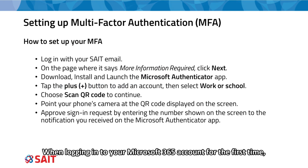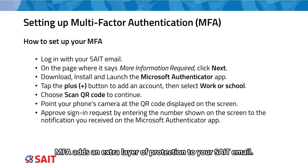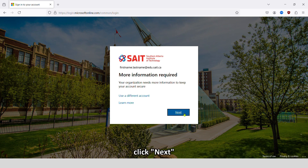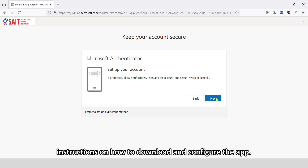When logging into your Microsoft 365 account for the first time, you will be prompted to set up your Multi-Factor Authentication or MFA. MFA adds an extra layer of protection to your SAIT email. On the page where it says More Information Required, click Next. To set up your MFA, follow the provided instructions on how to download and configure the app.